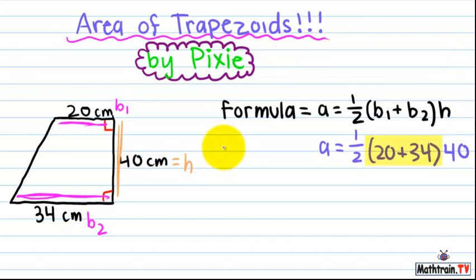Then first you're going to do 20 plus 34, and that is 54. Then you can plug that in.